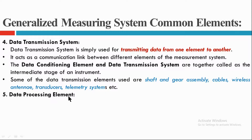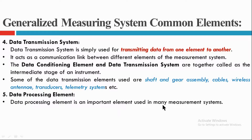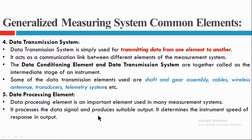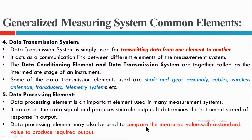After the data transmission system we have the data processing element, which is mostly present in all types of measurement systems. It processes the data signal and produces a suitable form of output. It determines the instrument's speed of response in output. Its main function is to compare the measured value with the standard value so that it will produce the required output level.